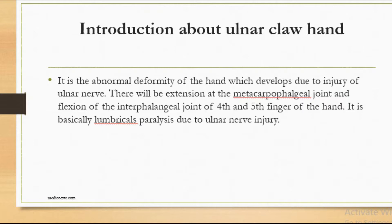Ulnar claw hand is an abnormal deformity of the hand which develops due to injury of the ulnar nerve. There will be extension at the metacarpophalangeal joint and flexion of the interphalangeal joints of the fourth and fifth fingers, because the fourth and fifth fingers are supplied by the ulnar nerve. This is basically due to lumbricals being paralyzed due to ulnar nerve injury.